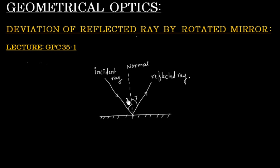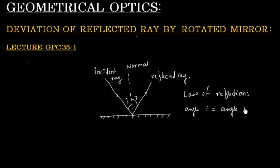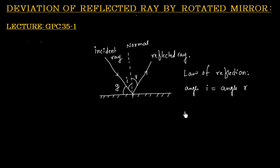We know from the law of reflection that angle I is equal to angle R. Angle I, that is the angle of incidence, is equal to angle R, that is the angle of reflection. This angle is called the glancing angle, so Z means glancing angle. If this angle is Z, then this angle will also be equal to Z, because I and R are basically the same.